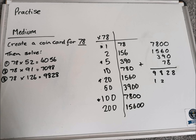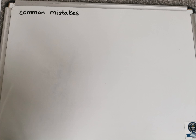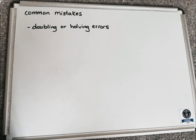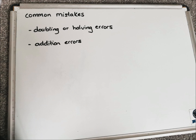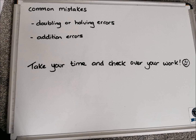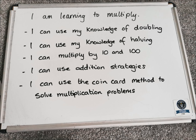That was a quick video on how to use a coin card. Please go back and look at the strategy again, take your time, and see if you can work out how to do other ones. There are some common mistakes that can happen: the number one is doubling or halving errors — if you need to revise, look at the doubling and halving videos. Another common mistake is addition errors — choosing the wrong numbers or adding incorrectly in a chimney sum. Take your time and double check your work. Well done everyone, hopefully today you've developed your knowledge of the coin card, doubling and halving, multiplying by 10 and 100, and addition strategies.